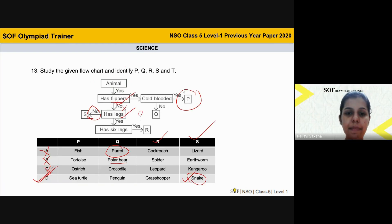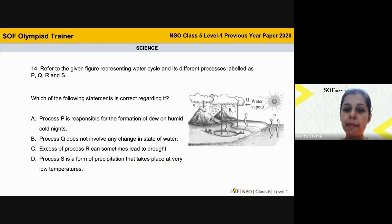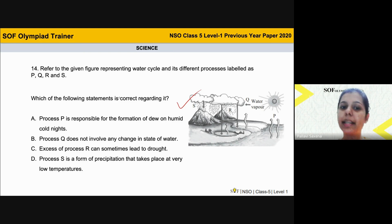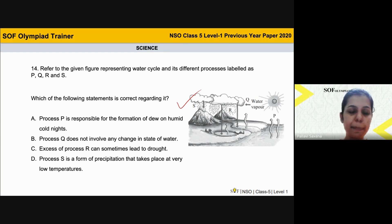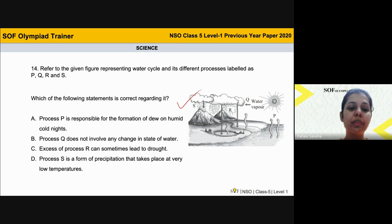Next question — a very simple question. We all know the water cycle and its processes. Refer to the given figure representing the water cycle, first identify all the processes, and then determine which of the following statements is correct.